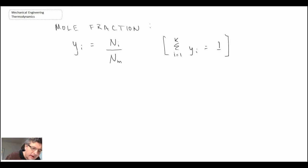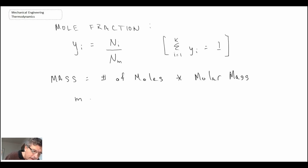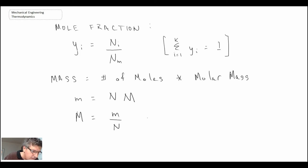Another thing to note — mass is defined as the number of moles times the molar mass, which you would have seen in freshman physics or chemistry courses. Using our nomenclature, mass equals N (number of moles) times M (molar mass). With that, we can define the molar mass as being the mass divided by the total number of moles, which gives units of kilograms per kilomole.